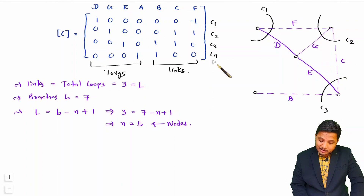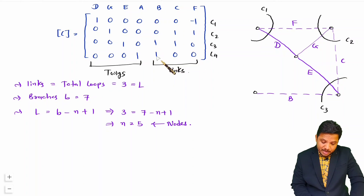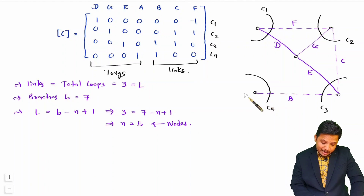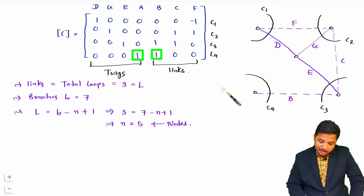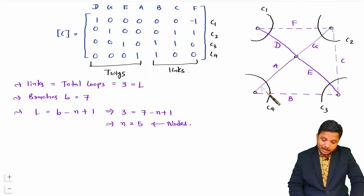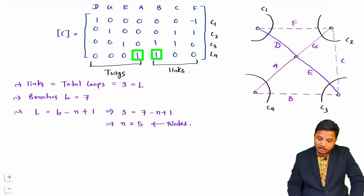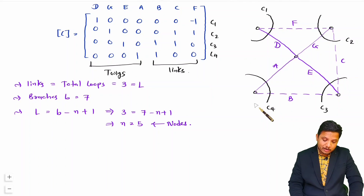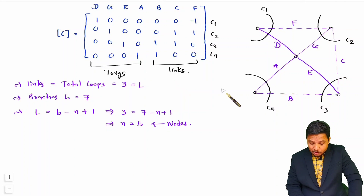Now we have the last cut set, c4. When you talk about c4, it is having b and a. Now b is already here, so the cut set c4 should be placed here. And for a — a is a twig and should be connected at center. If you connect it anywhere else it will fall in that cut set, but if you connect it towards center it won't interfere. So connect twigs towards center and provide cut sets on the outer edges.